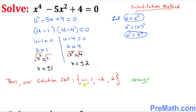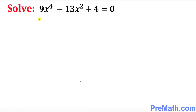Our solution set is: negative 1, positive 1, negative 2, positive 2. Finally, we're going to solve this given fourth degree equation using the substitution method as well.